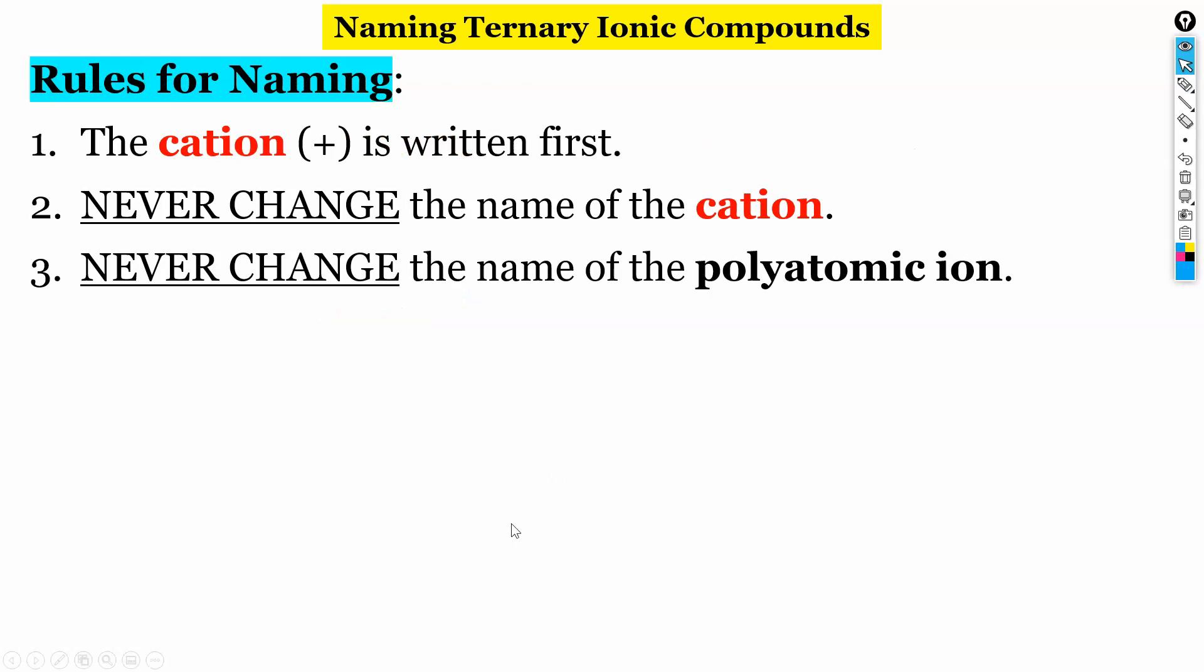So the naming, you might think this is going to be really complicated. But actually the naming for polyatomics is really easy. So these are our two rules. First rule, not any different. The cation always goes first. Second rule, not any different. We never change the name of the cation. The third rule, we never change the name of the polyatomic ion.